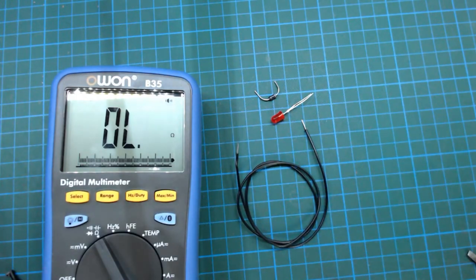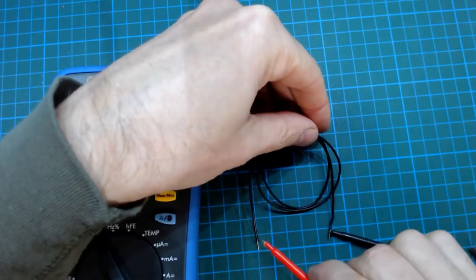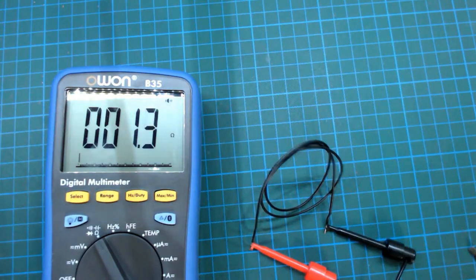You can also use a continuity test to see if there's a break in a wire. This is hookup wire and as you can hear there's no break in it.